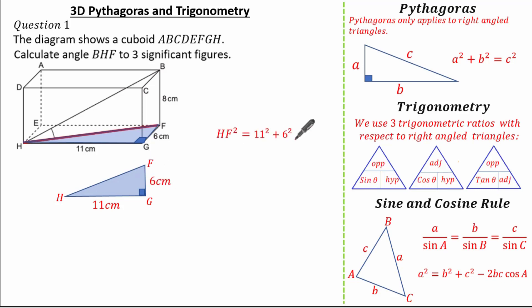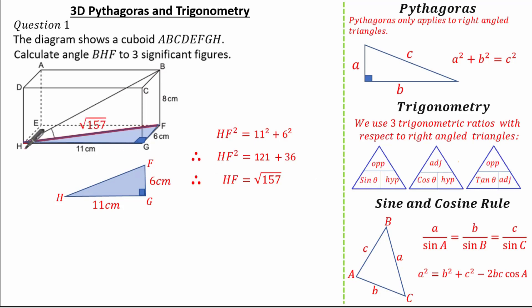So therefore, HF squared equals 11 squared plus 6 squared, which means HF squared equals 121 plus 36. Therefore HF equals root 157.